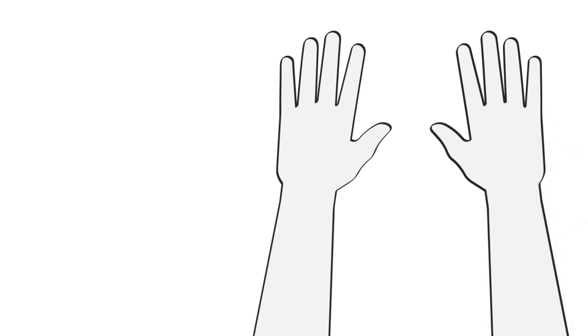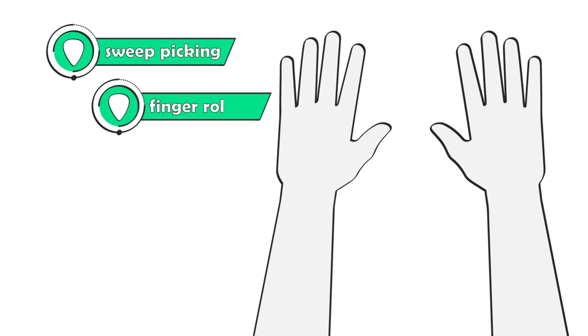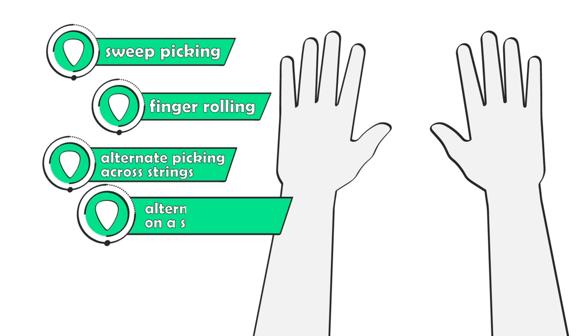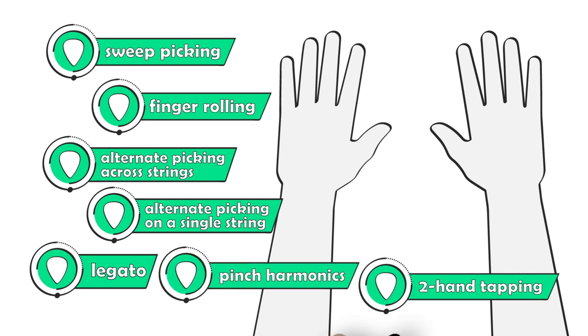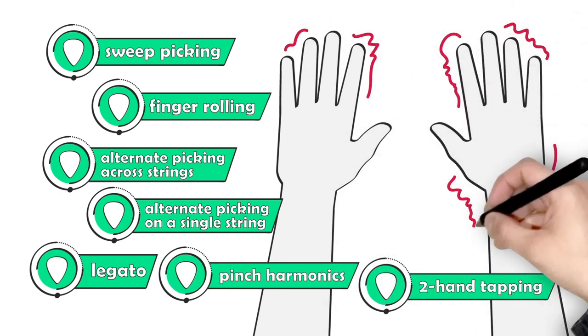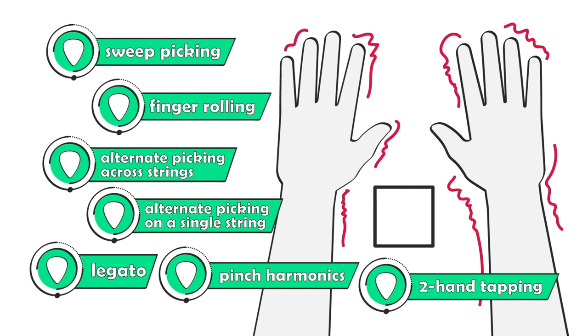The different techniques you do on guitar, sweep picking, finger rolling, alternate picking across strings, alternate picking on a single string, legato, two-hand tapping, pinch harmonics, and so on, are simply different types of motions. And this also means that if you can't play something as cleanly or as fast as you want, your hands simply haven't learned the motions needed to play the notes. The notes are just a byproduct of movements, and the motions make the notes possible.